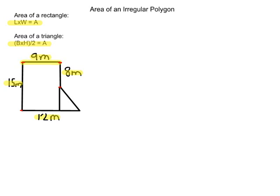We can now calculate the area of the rectangle. Since area is length times width, we write 15 as our length times 9 as our width. Calculating: 5 times 9 is 45, 9 times 1 is 9, plus 4 gives 13 — so the area of the rectangle is 135 meters squared. We've now figured out the area of the rectangle.